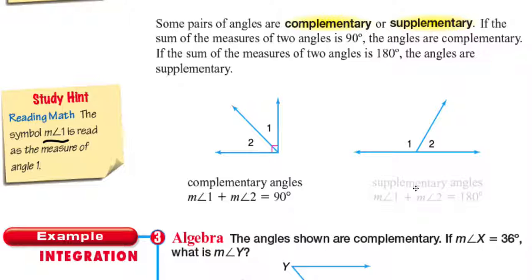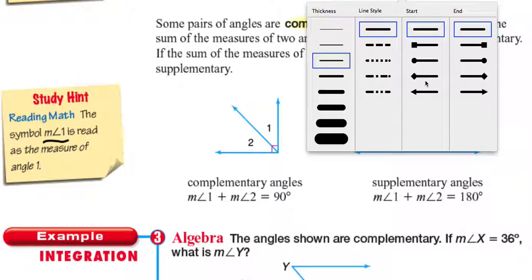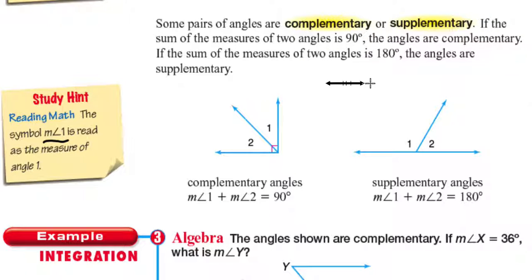Supplementary angles: the measure of angle one plus the measure of angle two is equal to 180 degrees. How do we know it's 180 degrees? Because it's a straight line. Any straight line gives you a value of 180 degrees — this is also called a straight angle. So the straight line is divided into two angles, and the measure of angle one plus the measure of angle two equals 180 degrees.